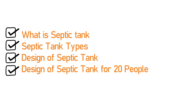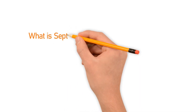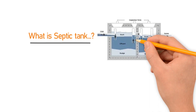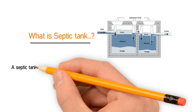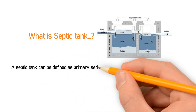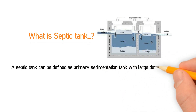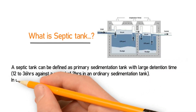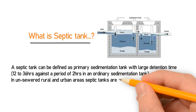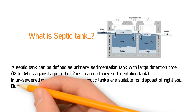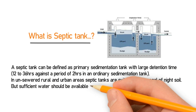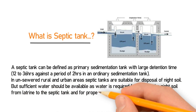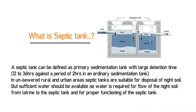The first topic is: what is a septic tank? A septic tank can be defined as a primary sedimentation tank with a large detention time — usually from 12 to 36 hours, compared to 2 hours in an ordinary sedimentation tank. In unserved rural and urban areas, septic tanks are suitable for disposal of night soil, but sufficient water must be available for flow from the latrine to the tank and for its proper functioning.